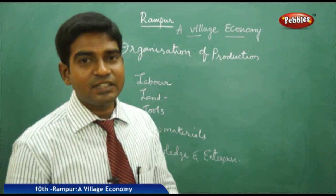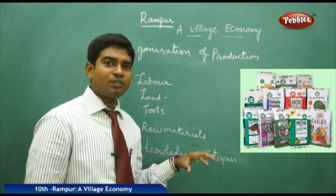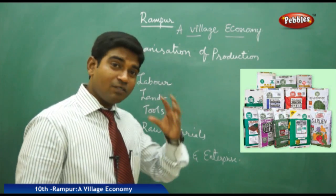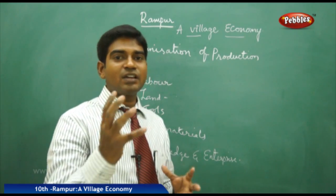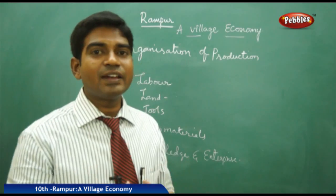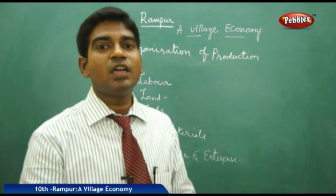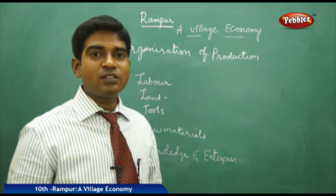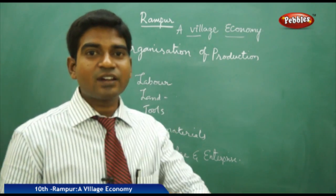The fourth factor is raw materials — seeds, fertilizers, and other inputs needed for cultivation. If raw materials are not prepared, the work cannot be done. The fifth factor is knowledge and enterprise — a capable person to oversee and manage everything. Just as a hospital needs a doctor to run properly, or a hotel needs a manager, production needs a knowledgeable person to coordinate all resources. Together, these five elements — land, labor, tools, raw materials, and knowledge — are called the organization of production, or the basic factors of production.